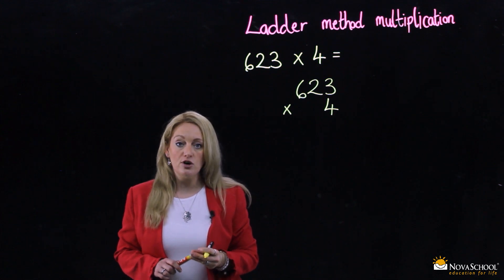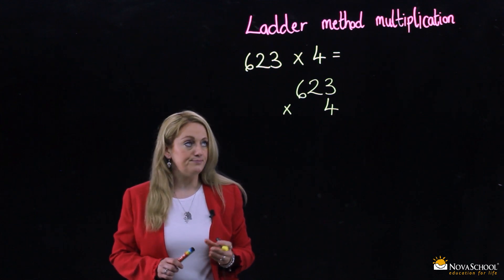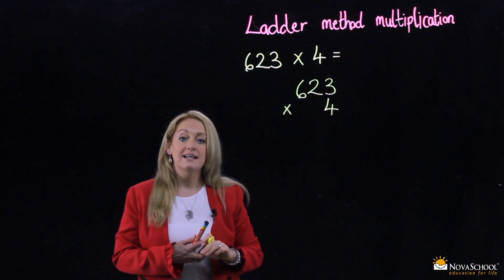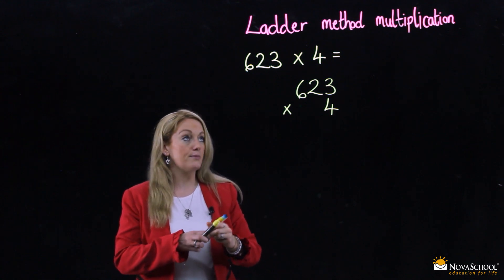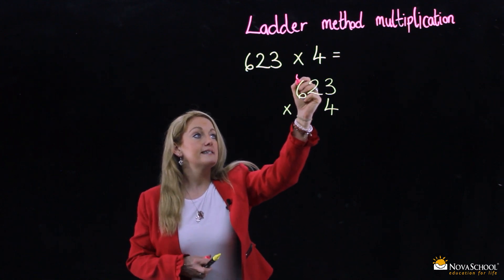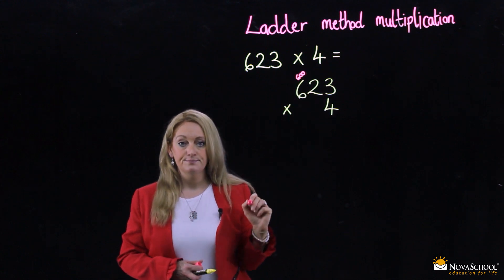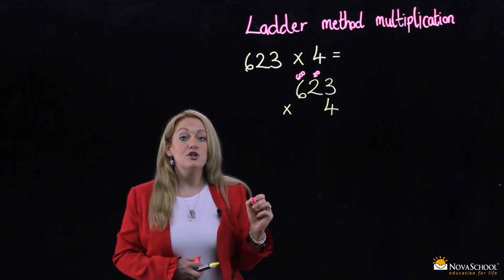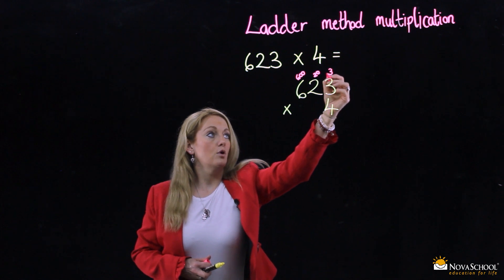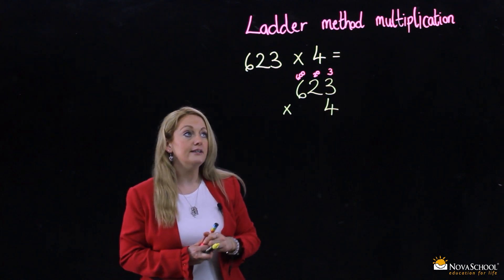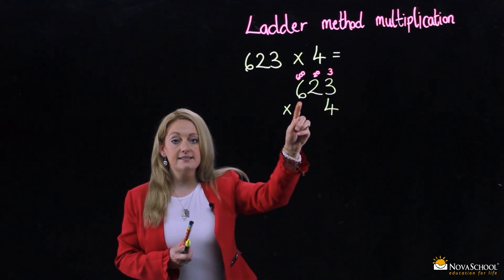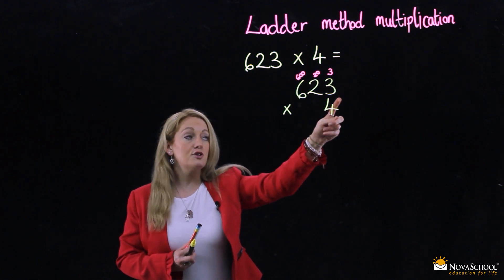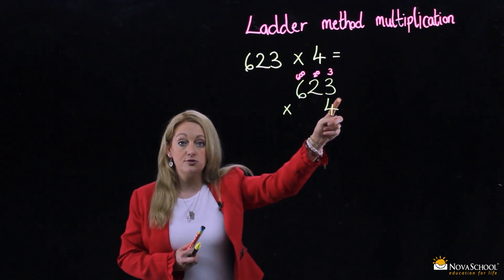Let's look at our columns again. We have 623. Let's write in the numbers — we have here 600, 20, and 3. We need to remember that this 6 is 600, the 2 is 20, and the 3 is 3 ones.